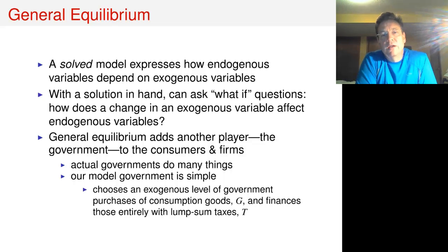Of course, actual governments do many things. Our government is very simple. It's going to choose an exogenous level of government spending on consumption goods, which we'll call G. This is going to get financed through lump sum taxes, capital T.